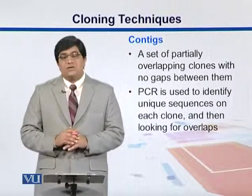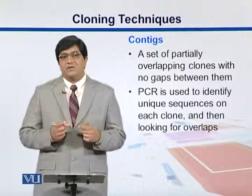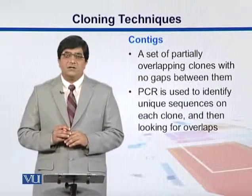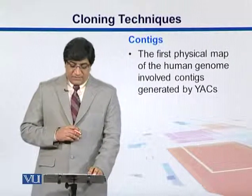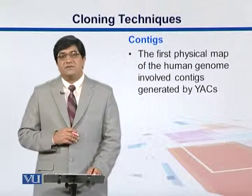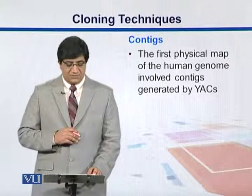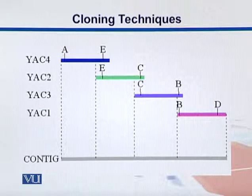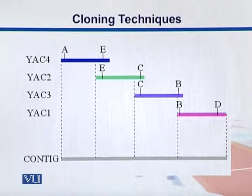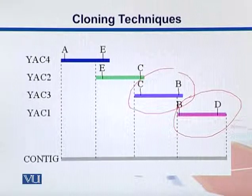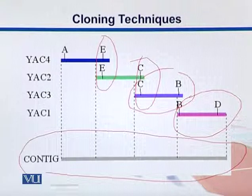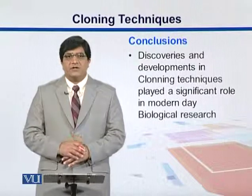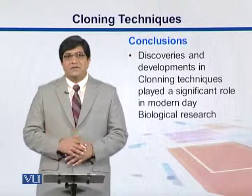If we have a set of clones that are overlapping one another, we call them contigs — a set of partially overlapping clones. The first physical map of the human genome involved contigs generated by YACs, and we will revisit this when we talk about the human genome project. Here is a conceptual representation: different clones coming from different YACs — yeast artificial chromosomes — such as clone from YAC1, clone from YAC2, with overlapping regions. Putting them together gives us what we call a contig. These improvements in cloning strategies were crucial for making room for genome sequencing.